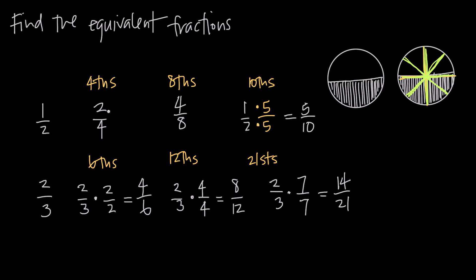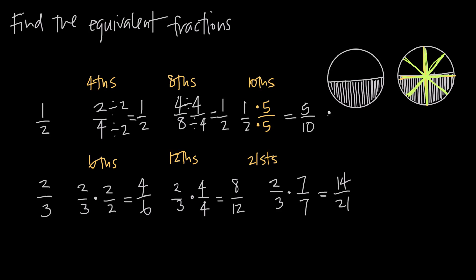For example, with two over four: is there anything that goes evenly into both two and four? Yes — two does. Two goes into itself once, and two goes into four twice. So divide the numerator by two and the denominator by two: two divided by two is one, four divided by two is two. That gives us back one half — we've reduced two fourths to one half, which is in lowest terms since there's no common factor between one and two other than one. Same with four over eight: divide both by four to get one half. And five over ten: divide both by five to get one half.